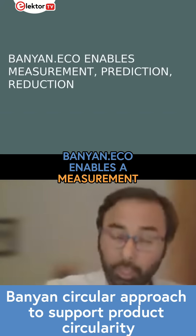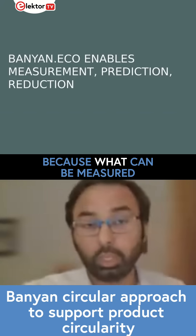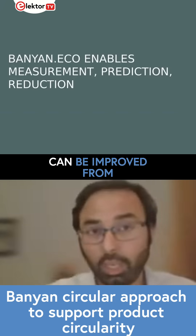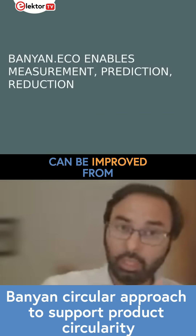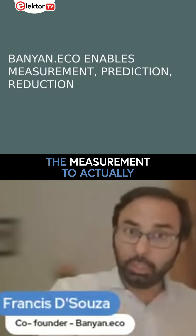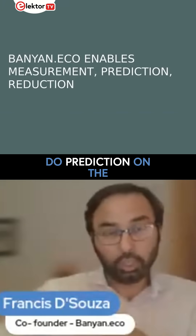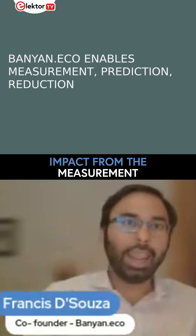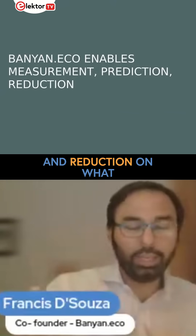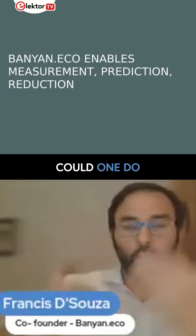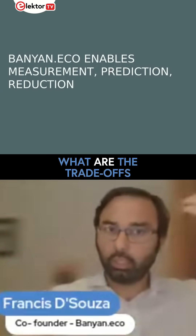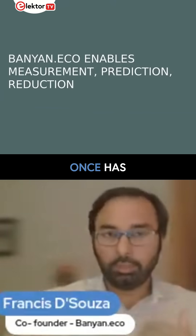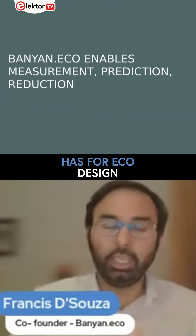Banyan.eco enables measurement, because what can't be measured can't be improved. From measurement, we do prediction on impact, and reduction — exploring the trade-offs and choices one has for eco-design.